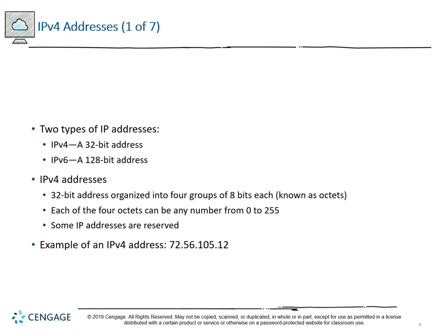IPv4 runs 32 bits in length; IPv6 runs 128. Some IP addresses are reserved and traditionally assigned by class. A Class A address goes from 1.0.0.0 up to 10.255.255.255. These divisions are based on classful IP assignment. An example IPv4 address is 72.56.105.12 — each octet gives a secondary measure for checking whether something belongs to a particular class.